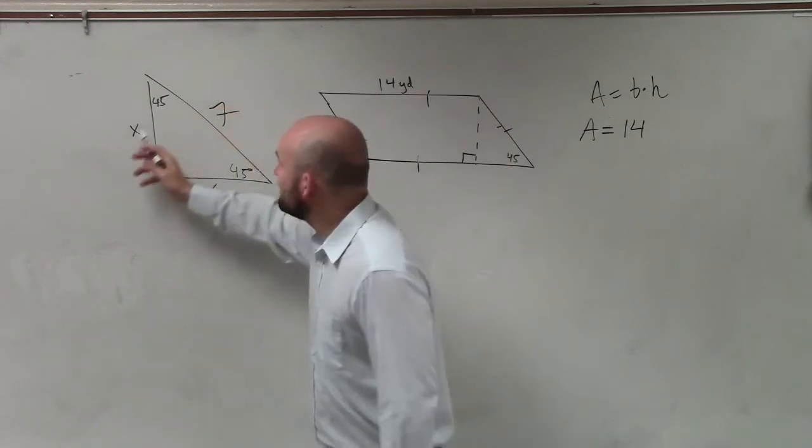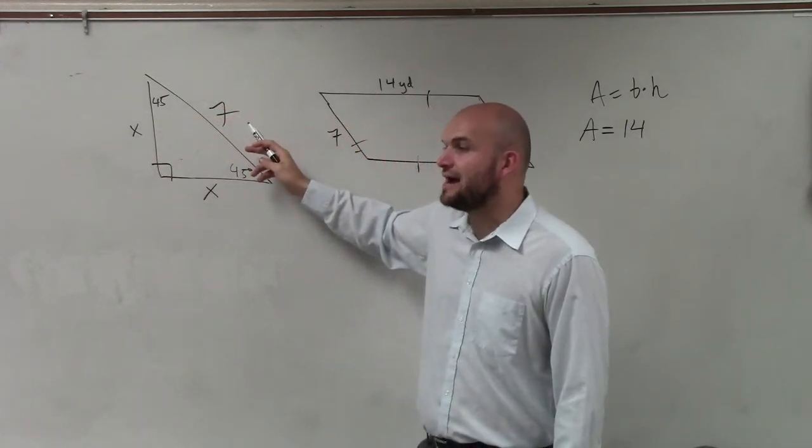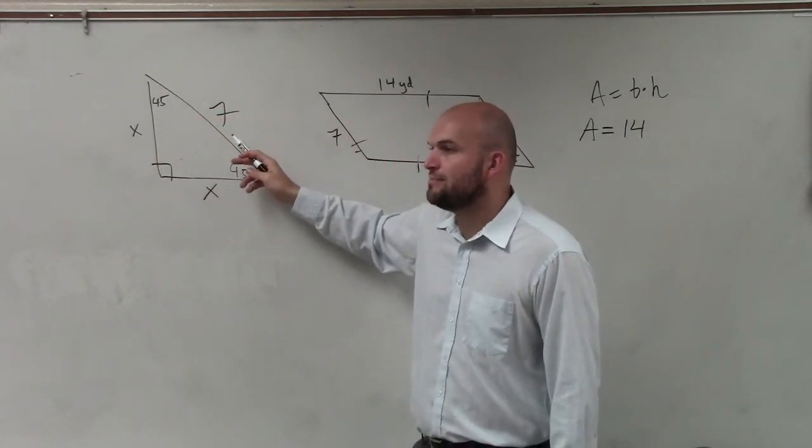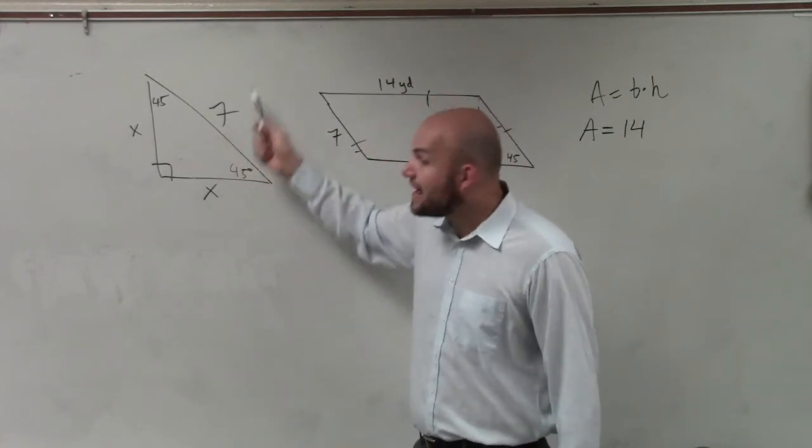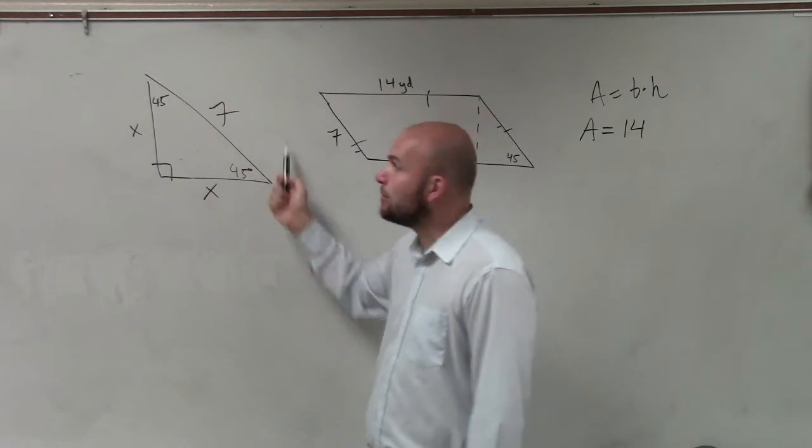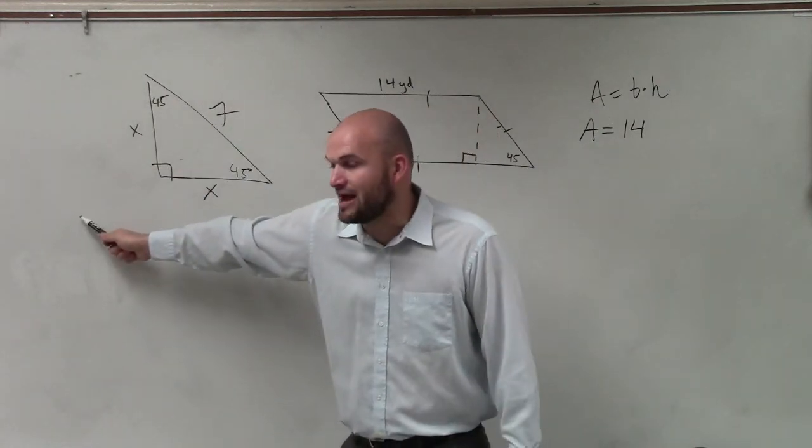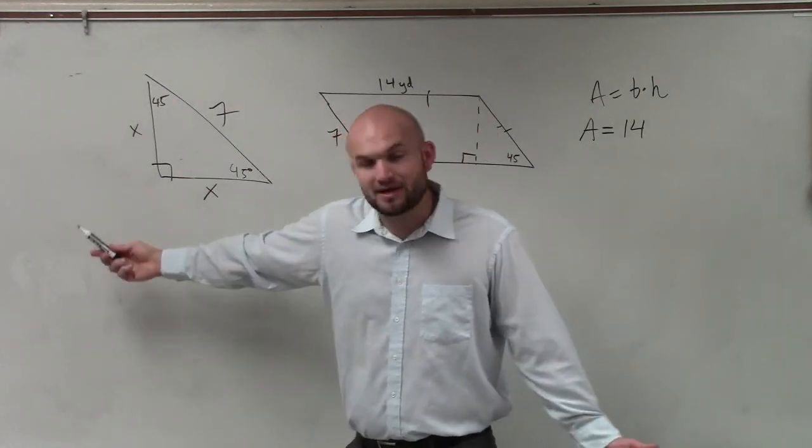Now, to go from my legs to my hypotenuse, I have to do what? Multiply by the square root of 2, right? So if I have my hypotenuse, and I want to go back to find the leg, I would have to divide by the square root of 2.